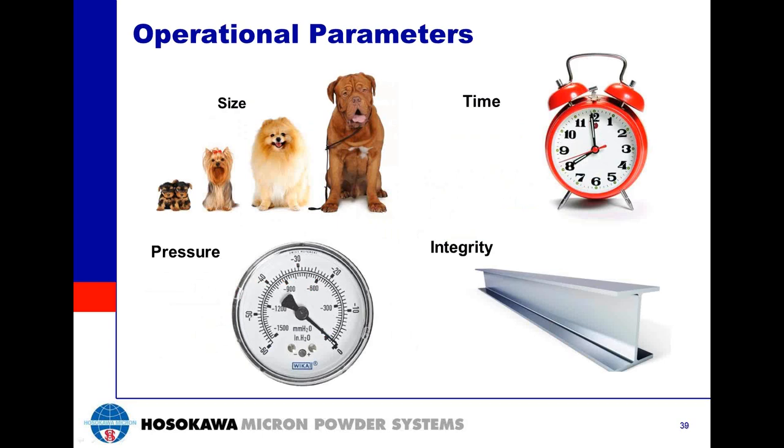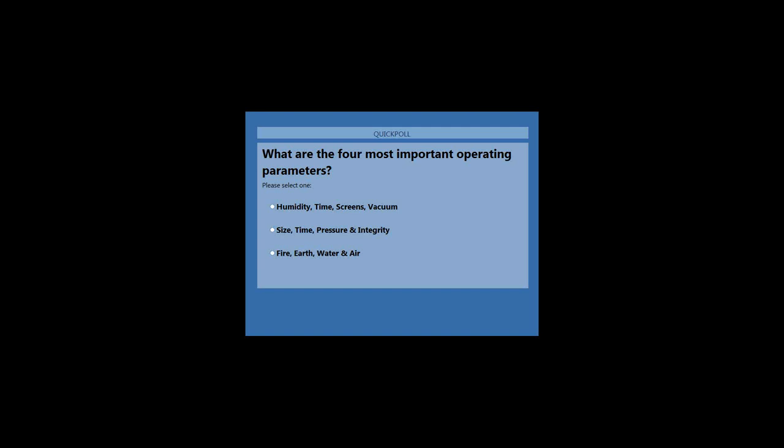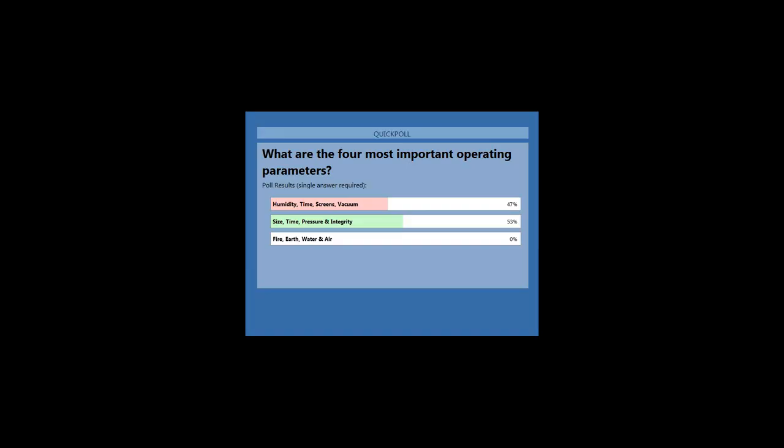Our third poll question: what are the four most important operating parameters? The choices are humidity, time, screens, and vacuum; or size, time, pressure, and integrity. The poll results show 47% said humidity, time, screens, and vacuum, while 53% said size, time, pressure, and integrity. Those who answered humidity, time, screens, and vacuum were very close, but the correct answer is size, time, pressure, and integrity. Humidity plays an important part, but it is not one of the four operational parameters in pneumatic sieving.